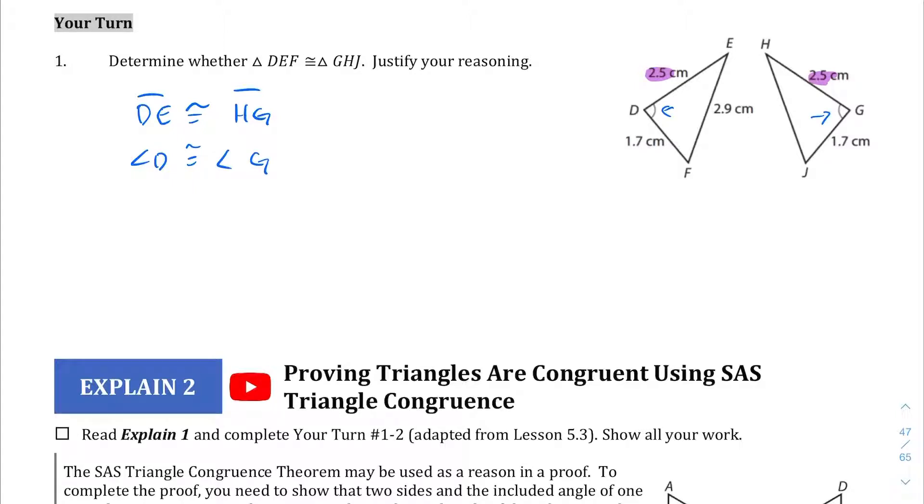So we have a side. We can see here that side DF and side JG are both 1.7 centimeters. So we can conclude that DF is congruent to JG or whichever order you want to put that in. And because of that we have side angle side triangle congruence.